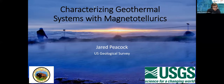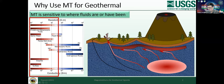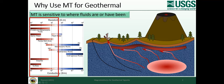Jared Peacock will talk about geothermal applications of using MT. Why use MT for geothermal? MT is extremely sensitive to where fluids are in the crust or where they have been. All the fluids and mineralizations are highly conductive — on the order of a couple orders of magnitude relative to the host rock. Compared to seismic where you're looking at a few percent change, here we're looking at orders of magnitude difference. These fluids should highlight quite nicely when exploring for geothermal.